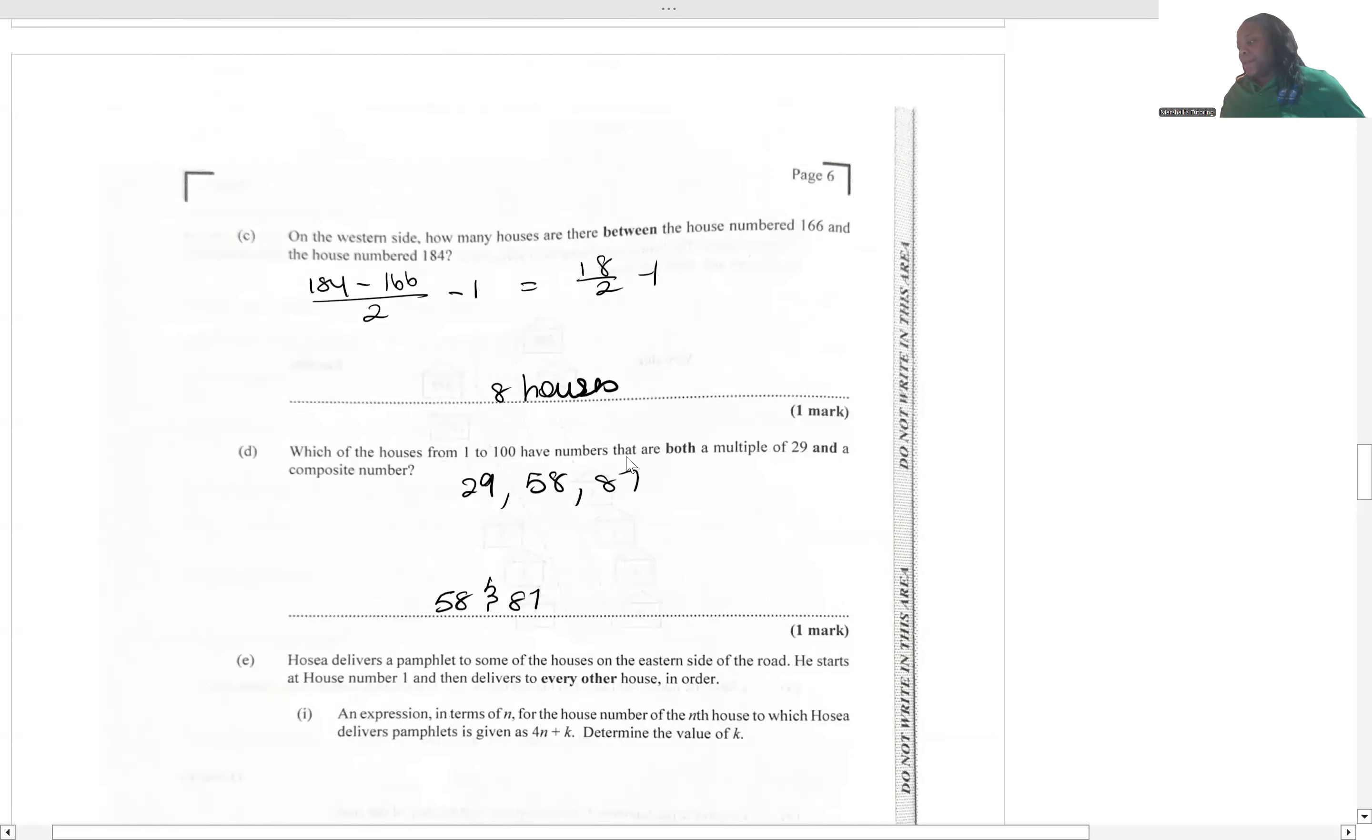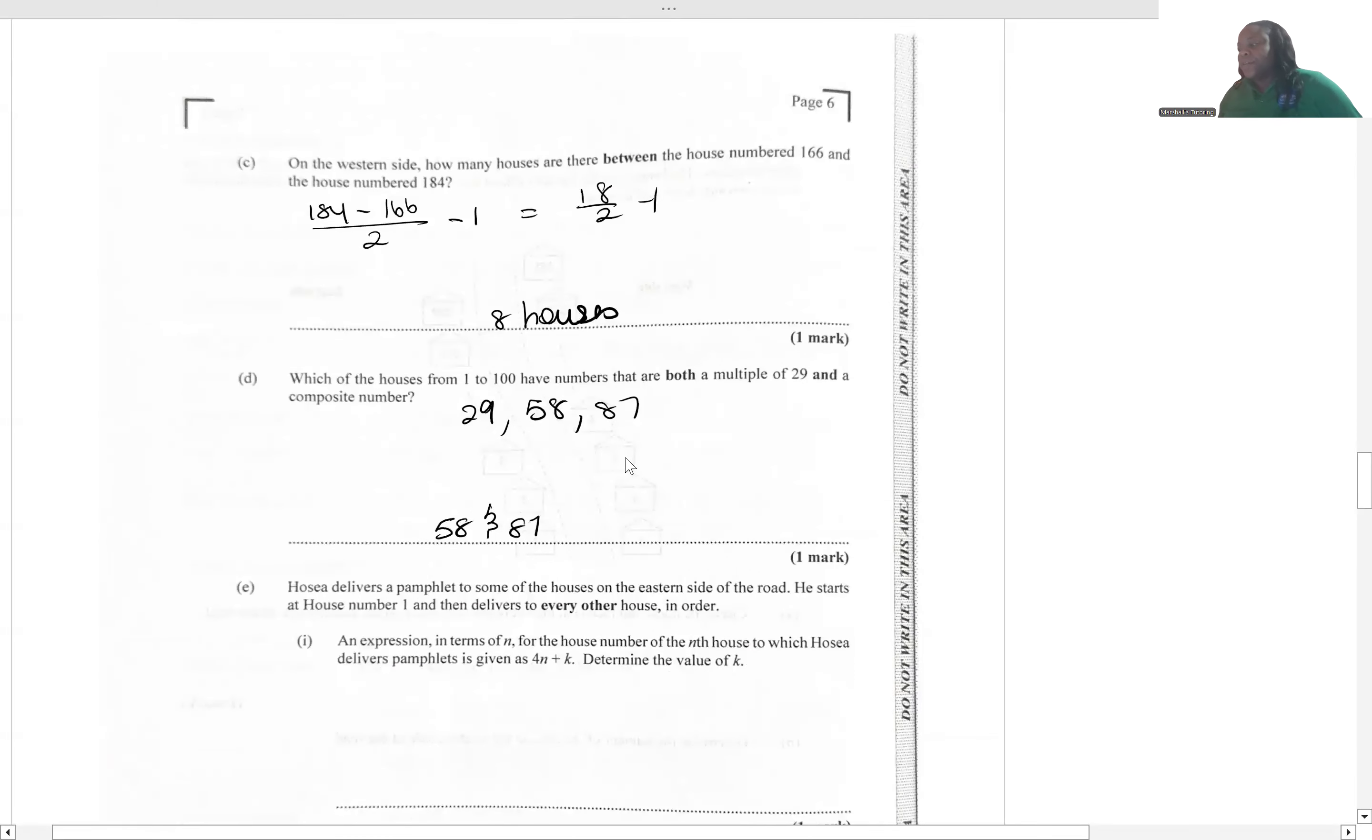Hosea delivers a pamphlet to some of the houses on the eastern side of the road. He starts at house number 1 and then he delivers to every other house in order. They gave us an expression in terms of n for the house number of the nth house to which Hosea delivers pamphlets.